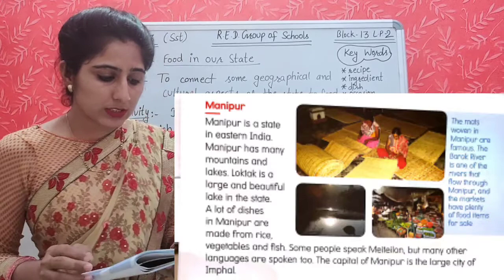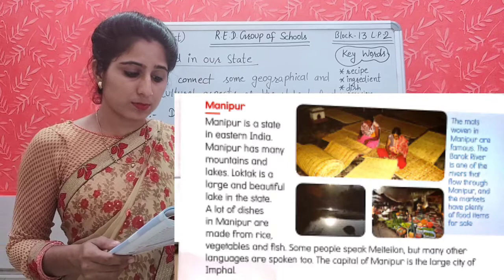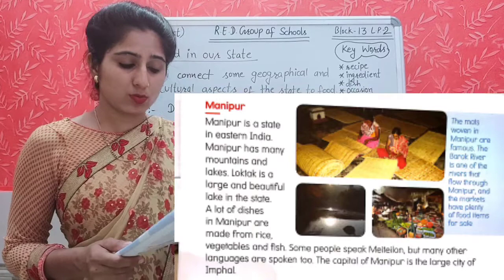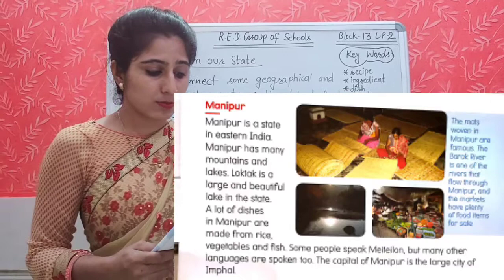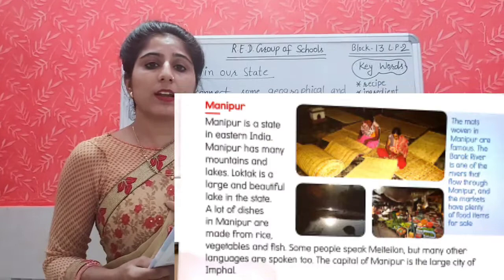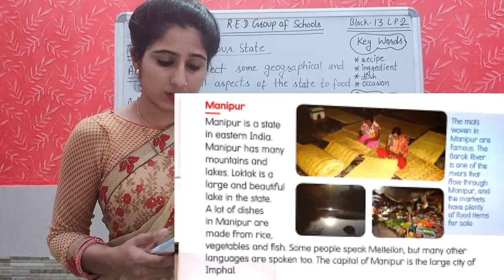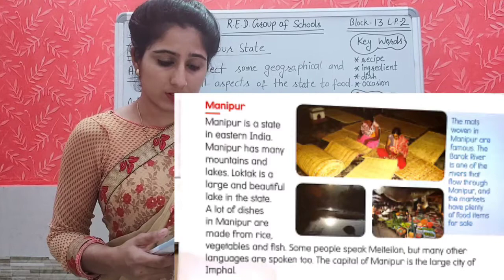Manipur is a state in eastern India. Manipur has many mountains and lakes. Loktak is the largest and most beautiful lake in the state. A lot of dishes in Manipur are made from rice, vegetables, and fish. Some people speak Meitei, but many other languages are spoken too. The capital of Manipur is the large city of Imphal.